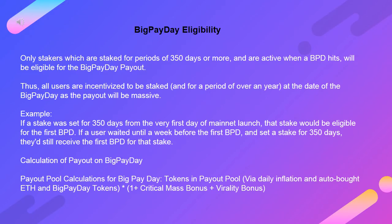Big Payday eligibility: only stakers which are staked for periods of 350 days or more, and are active when a Big Payday hits, will be eligible for the Big Payday payout. Thus all users are incentivized to be staked for a period of over a year at the date of their Big Payday, as the payout will be massive. Example: if a stake was set for 350 days from the very first day of mainnet launch, that stake would be eligible for the first BPD. If a user waited until a week before the first BPD and set a stake for 350 days, they'd still receive the first BPD for that stake. Payout pool calculations for Big Payday: tokens in payout pool via daily inflation and auto-bought ETH, multiplied by (1 + critical mass bonus + virality bonus).